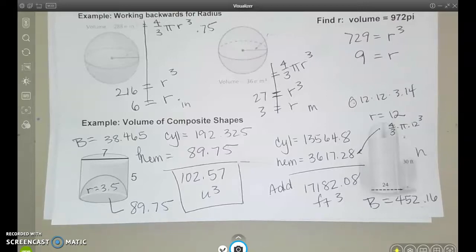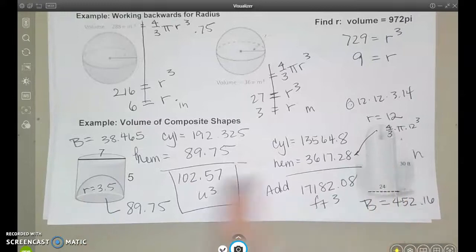So for spheres, we can use the radius to find the volume. We can start with the volume and work backwards to get the radius. And we can find volume of composite shapes that might have cylinders, spheres, and cones all put together.